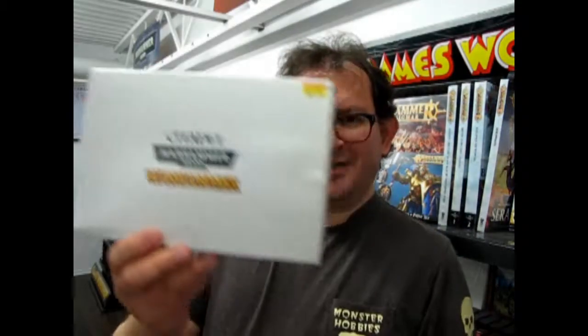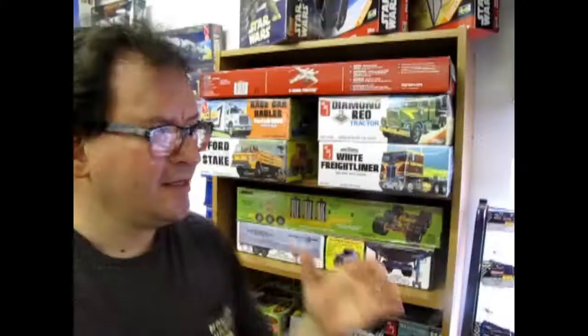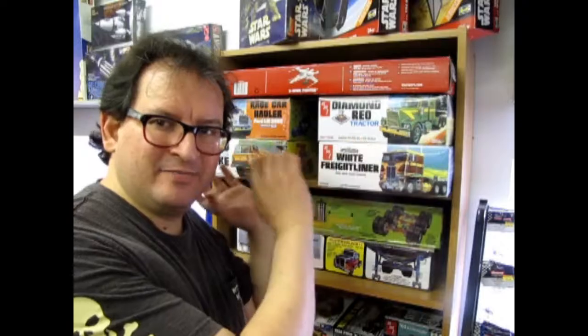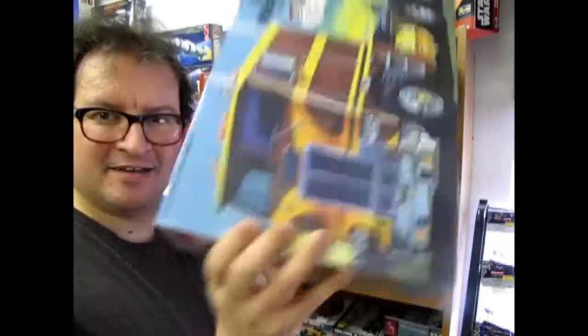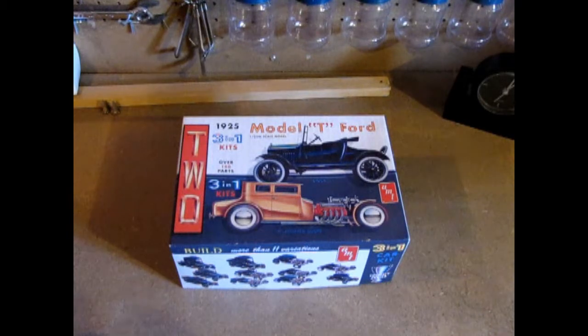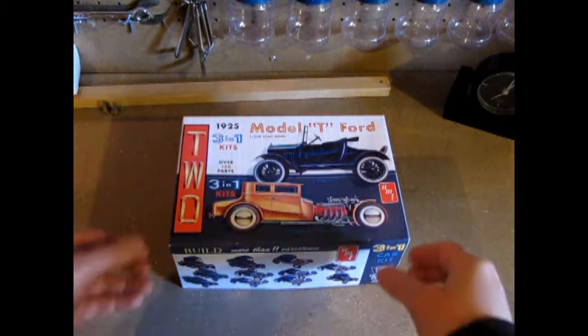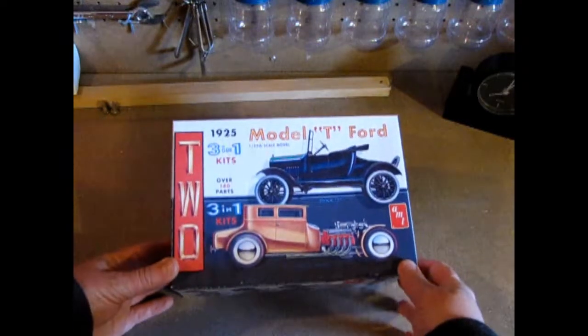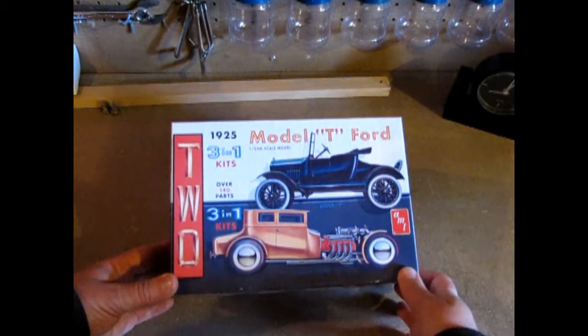What's in the box? Today's episode of What's in the Box was filmed right here at Monster Hobbies in High River, Alberta, Canada. Hello everybody, welcome to another episode of What's in the Box. And this time we have the AMT 3-in-1 1925 Ford Model T kit.